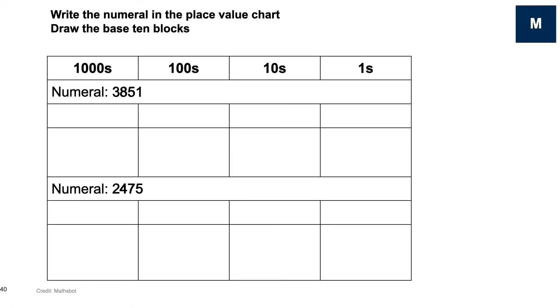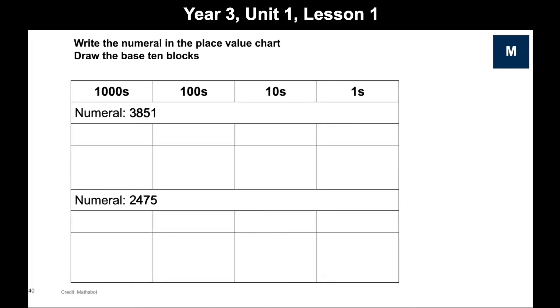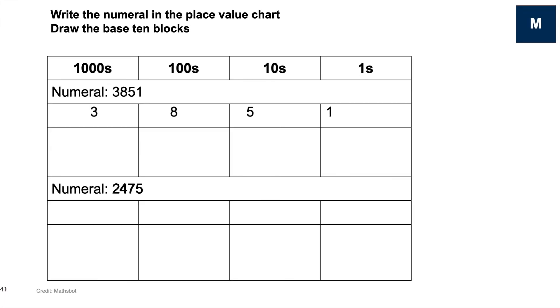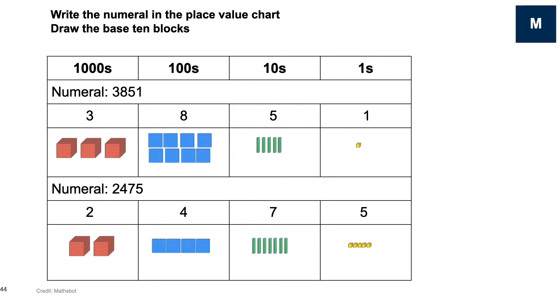This is important as we know that students need lots of chances to consolidate what they're learning. For example, having built up to identifying numerals from base 10 blocks representing the value of the number, I then reverse the process — identifying place value digits and base 10 blocks from a given numeral — which gives them additional practice of that concept.